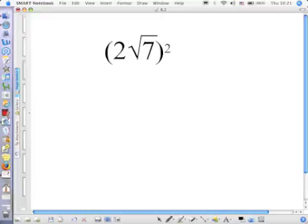28 is correct. You square the 2, that gives you 4. Then you square the square root of 7, that gives you 7. And 4 times 7 is 28.